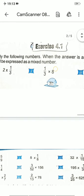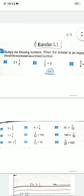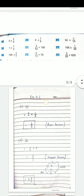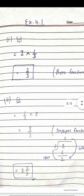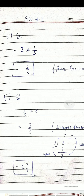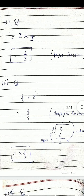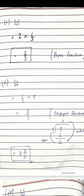اب question نمبر 2 دیکھتے ہیں: 1/3 multiply by 8۔ یہ 1×8 اوپر اور 3 نیچے — تو آجائے گا 8/3۔ غور سے دیکھیں یہ improper fraction ہے، تو ہمیں اس کو mixed number والی form میں convert کرنا پڑے گا۔ سوال میں بھی لکھو: mixed number میں convert کرنا ہے۔